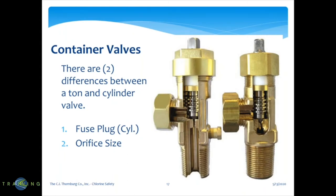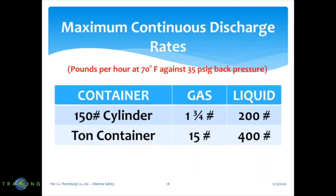Container valves. There are two differences between a ton and cylinder valve: the fuse plug in a cylinder and the orifice size. Maximum continuous discharge rates at 70 degrees ambient temperature with 35 PSI back pressure: for a 150-pound cylinder, the gas rate is 1.75 pounds per hour and as a liquid it's 200 pounds. A ton container is 15 pounds as a gas and 400 pounds as a liquid.